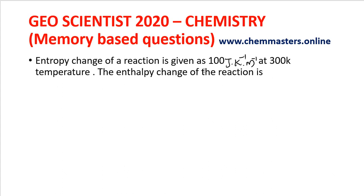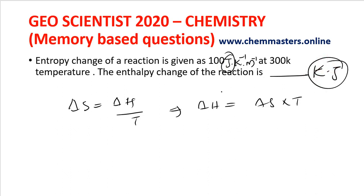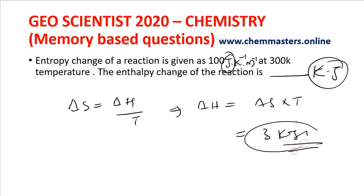Next question: the entropy change of a reaction is given as 100 joules per kelvin per mole at 300 kelvin temperature. The enthalpy change of the reaction is found using the formula ΔS = ΔH/T, from which we can get ΔH. Entropy is given in joules but the answer is asked in kilojoules, so you get approximately 30 kilojoules. That is our answer — just memorize the options.